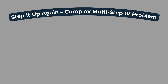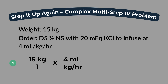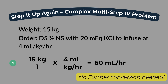Let's step it up again. You're caring for a pediatric patient who weighs 15 kilograms. The provider orders D5 half normal saline with 20 milliequivalents of potassium chloride to infuse at 4 milliliters per kilogram per hour. Your job is to figure out the total milliliters per hour to program into the IV pump. Step one: multiply the child's weight by the ordered rate — 15 kilograms times 4 milliliters per kilogram per hour equals 60 milliliters per hour. Notice how the kilogram units cancel, leaving milliliters per hour. Same rules apply — different level of complexity, and definitely NCLEX style.